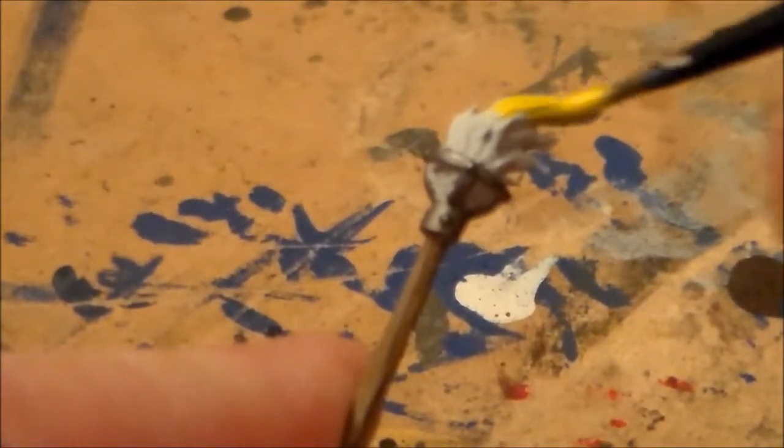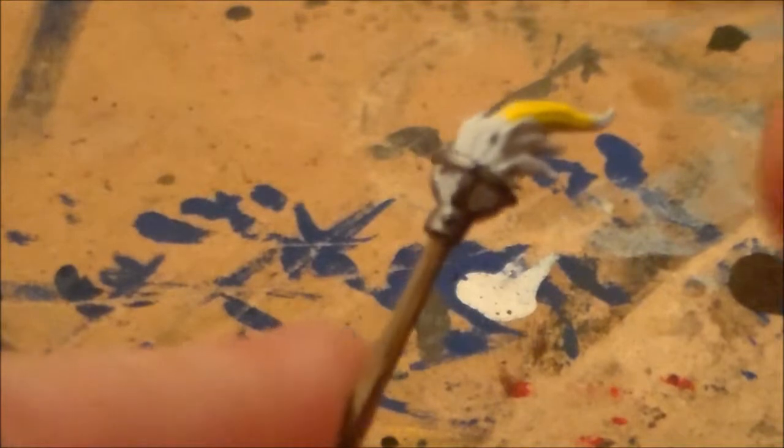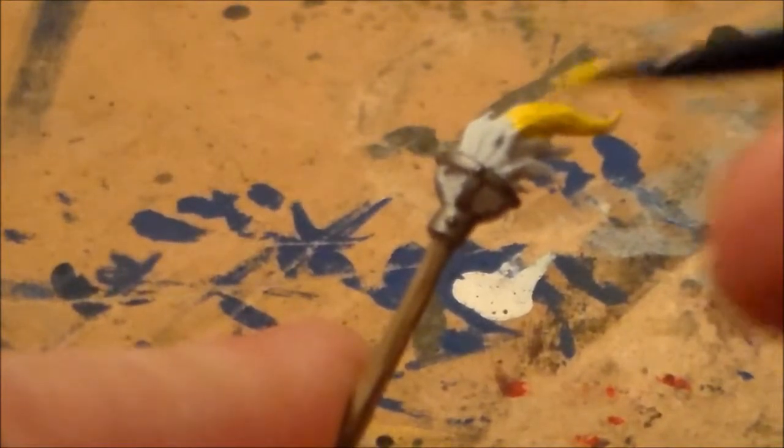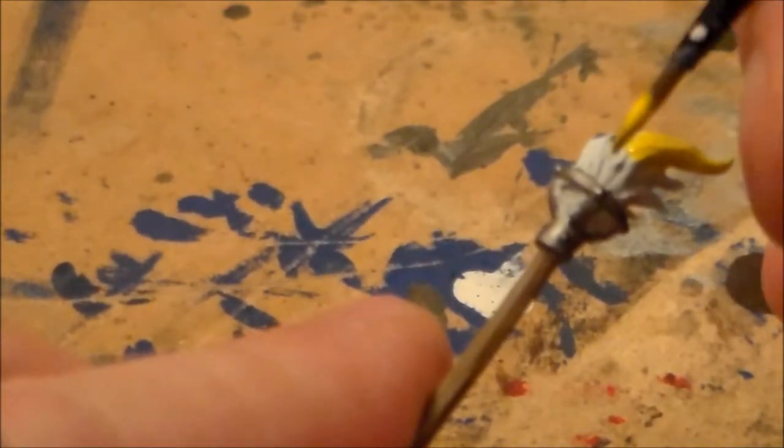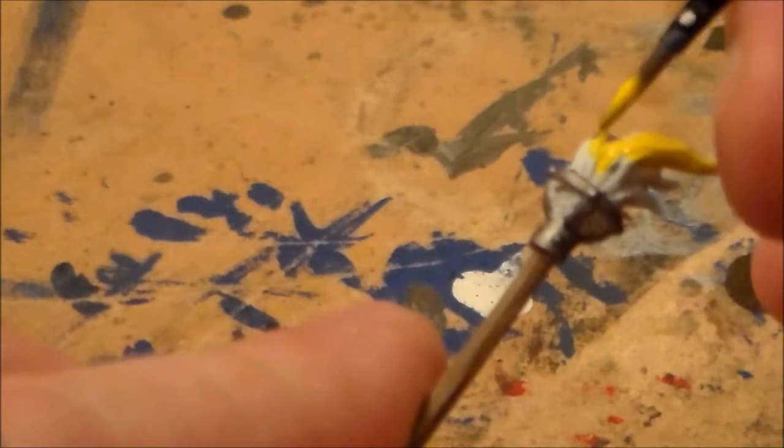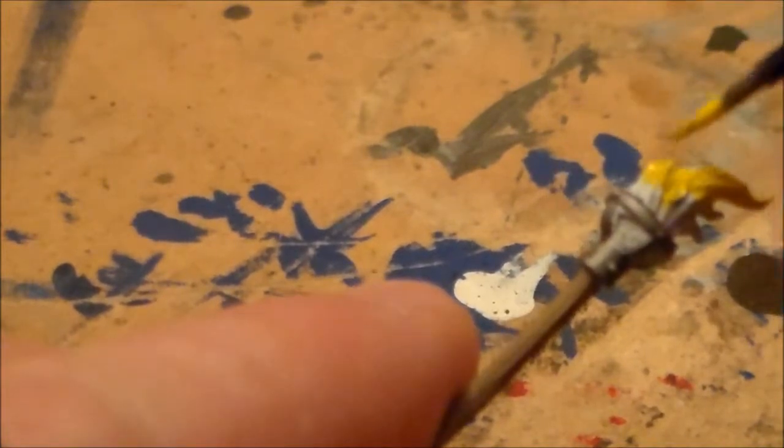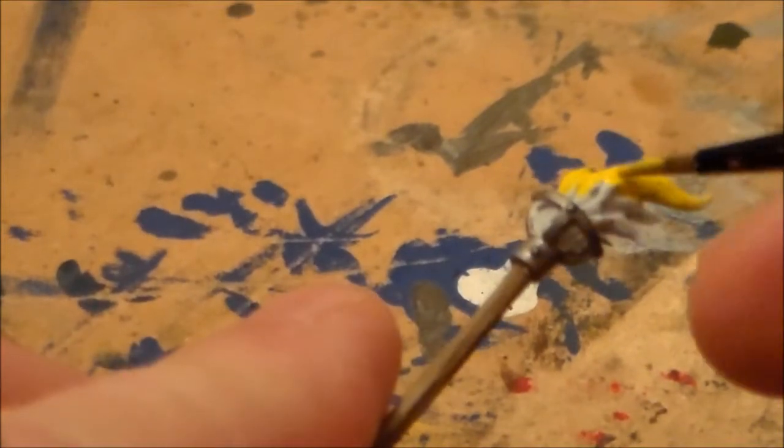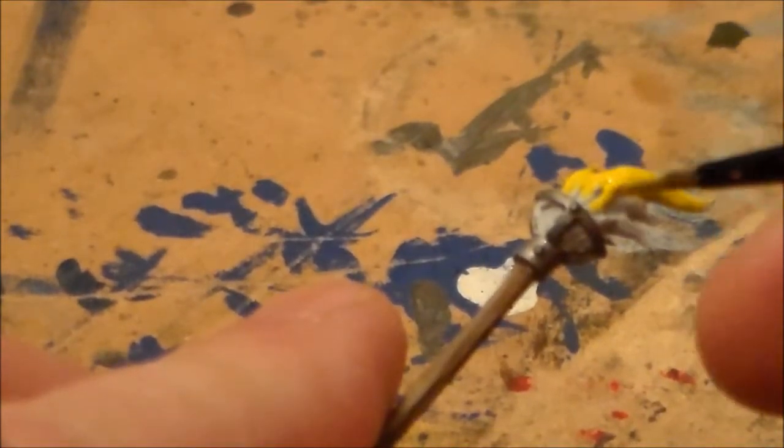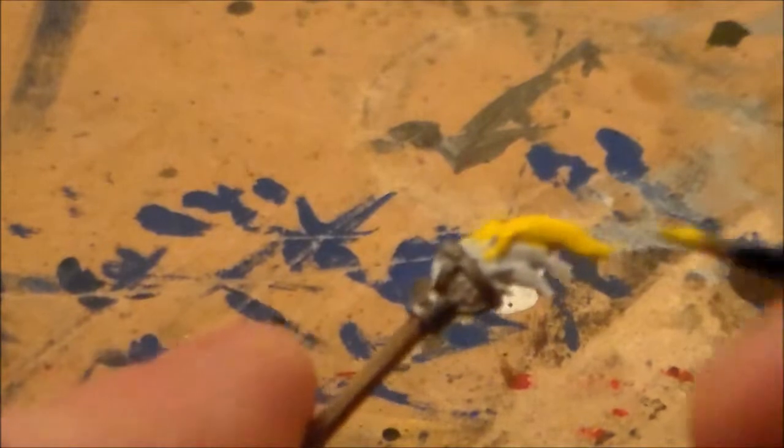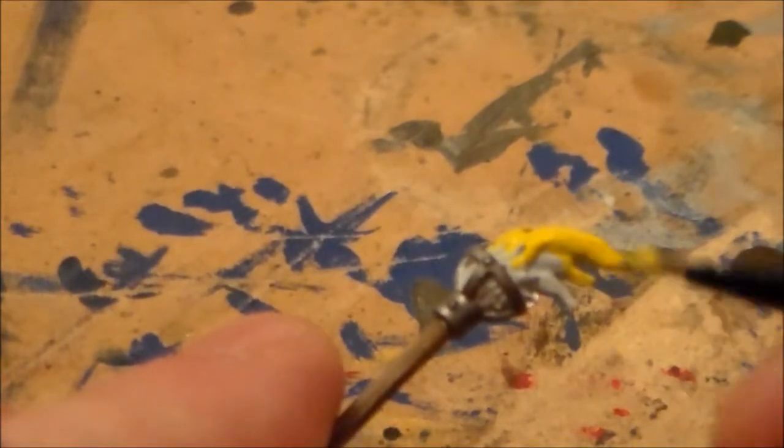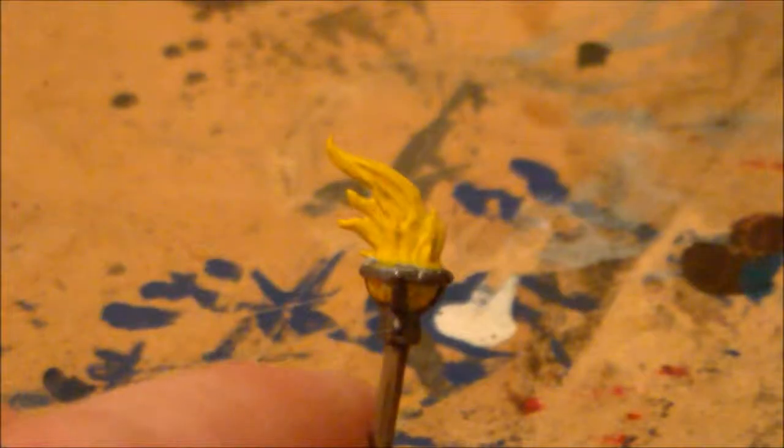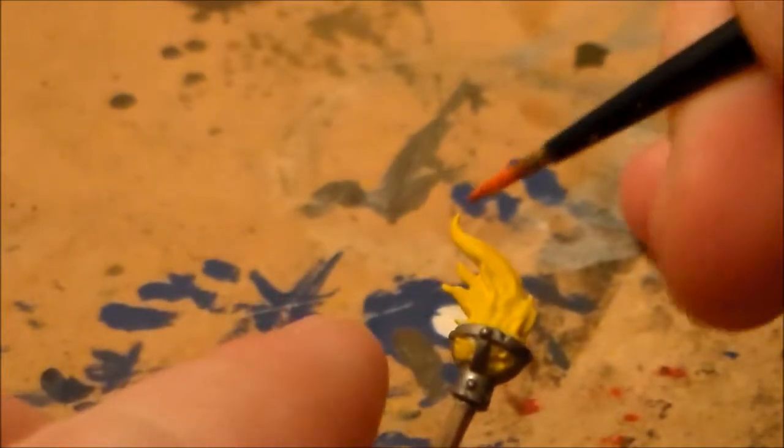The first color I went to was the sunburst yellow, just to kind of get the bright background on it. Pretty much just cover it all, but just leave small bits of white near the bottom, just barely noticeable.